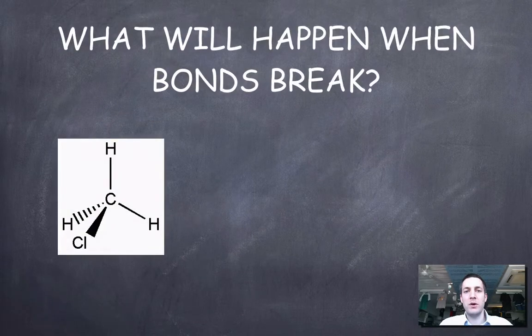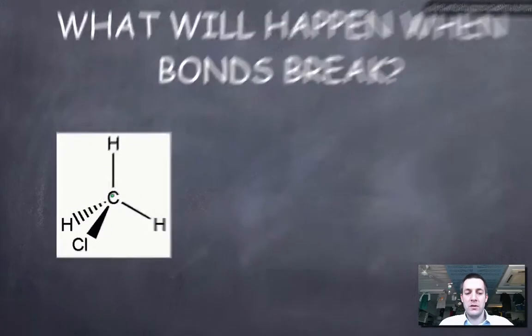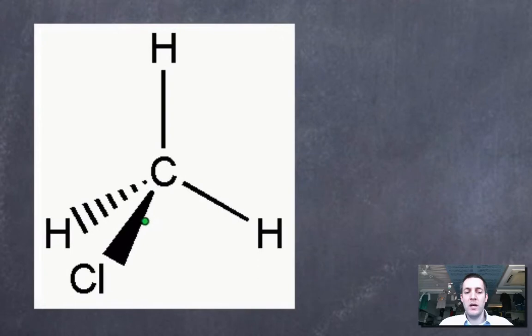So what will happen when bonds break? How will we show this? First of all if a bond like this one were to break why is it that we think that the curly arrow might look like that? Well because a curly arrow shows the movement of a pair of electrons. Where's the pair of electrons here? It's in that bond. Why should that pair of electrons go to the chlorine? Because chlorine attracts electrons more than carbon does.